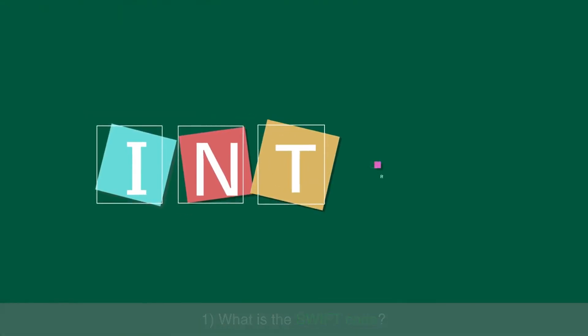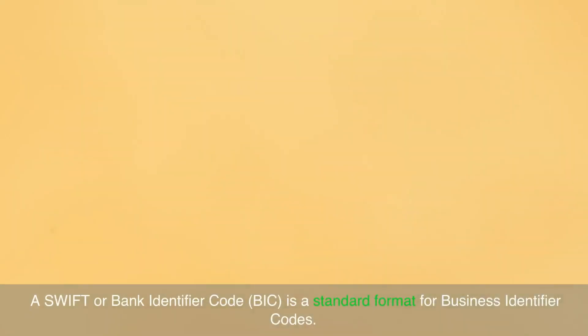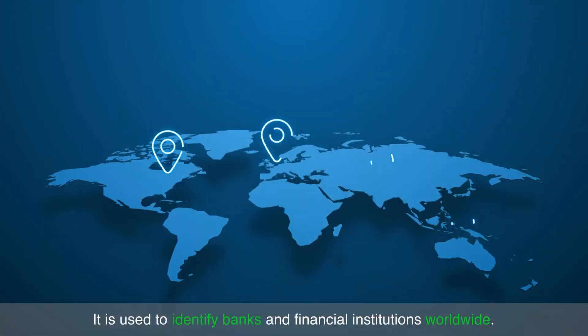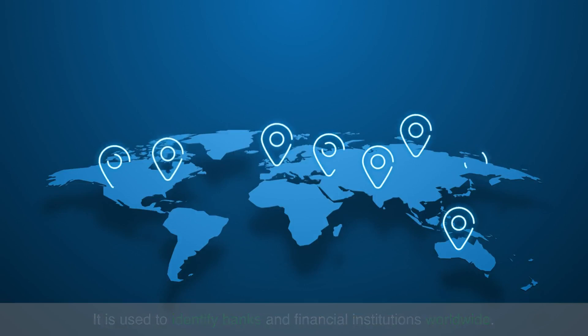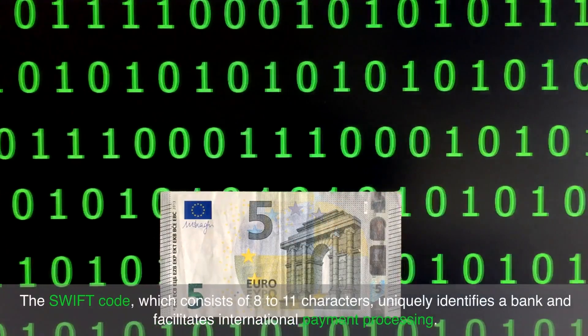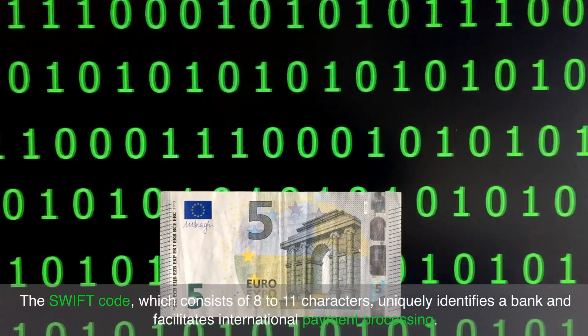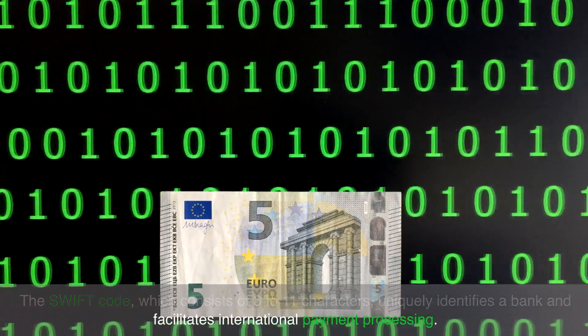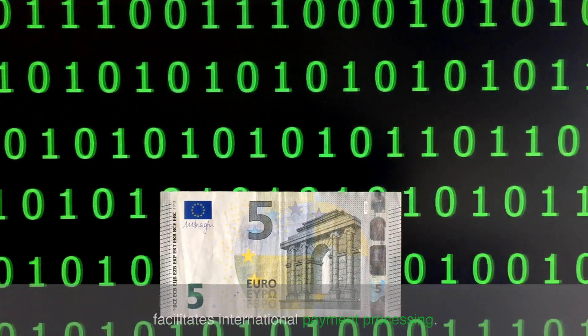What is the SWIFT code? A SWIFT, or Bank Identifier Code (BIC), is a standard format for business identifier codes. It is used to identify banks and financial institutions worldwide. The SWIFT code, which consists of 8 to 11 characters, uniquely identifies a bank and facilitates international payment processing.